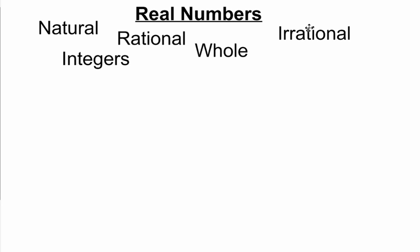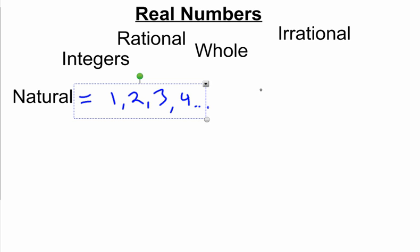We've got to know what those are. So let's start off with the first one, which is natural numbers. Natural numbers are the ones that you've done the most with in your entire life. They're called counting numbers. So we have one, two, three, and so forth. These are called counting numbers.